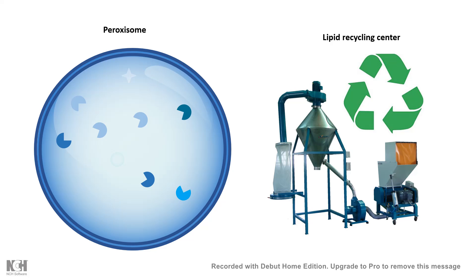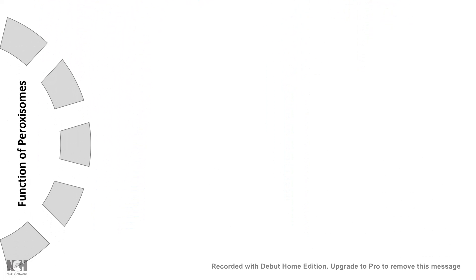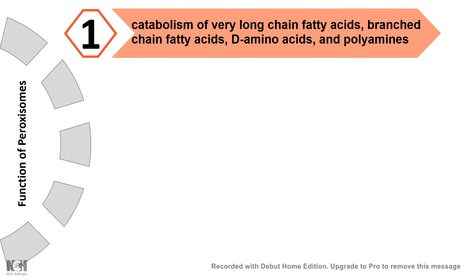Peroxisome is thought to be produced from the ER itself. The overall functions of peroxisomes include: first, the peroxisome is an important site where catabolism of long-chain fatty acids takes place. Also, branched-chain fatty acids, D-amino acids, and polyamines are catabolized in the peroxisome.